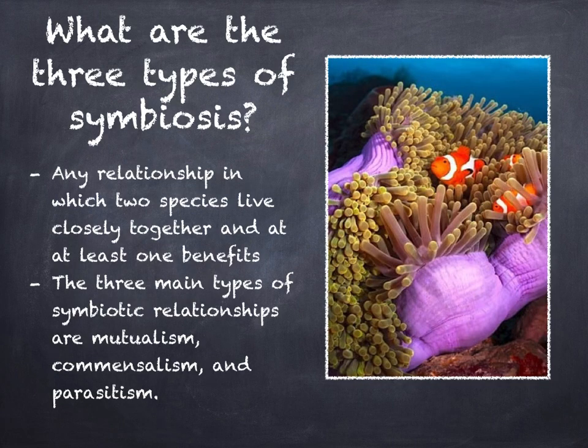What are the three types of symbiosis? In addition to competition and predation, symbiosis is a third type of interaction among organisms. Symbiosis is any relationship in which two species live closely together and at least one of the species benefits. The three main types of symbiotic relationships are mutualism, commensalism, and parasitism.